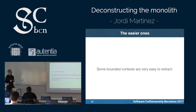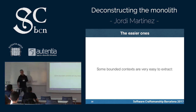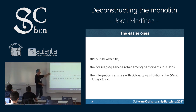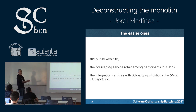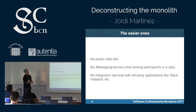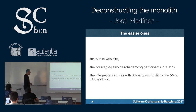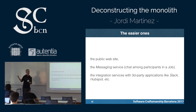Experience says that some bounded contexts are much easier to extract than others. For instance, the public website is probably the first component you'd decouple, because it's completely isolated — not related to any other component, maybe just for login or sign-up. Similarly, a messaging service has almost no relation to other features in the system, provided users are the same. Integrations with HubSpot or Slack are also quite easy to decouple.